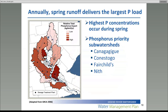As part of the water management plan, we also tried to identify where those large loads of phosphorus and nitrogen are coming from. This slide illustrates generally the priority watersheds with respect to phosphorus. We looked at relative loads across the watershed and our major basins. We're looking at the Nith River, Fairchild's Creek, Kanagajig Creek, and Conestoga River as the priority sub-watersheds where we really need to reduce phosphorus loads from.